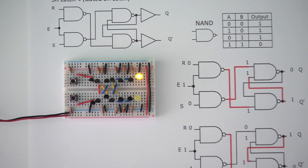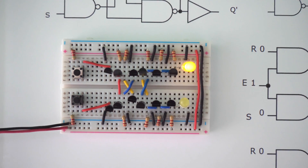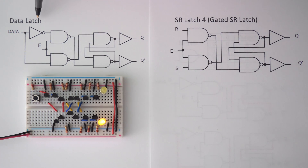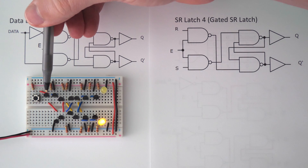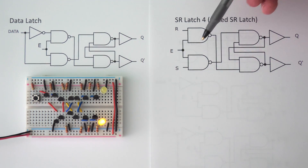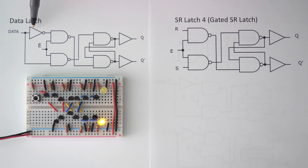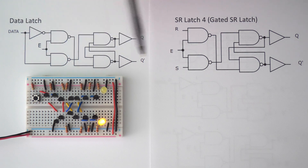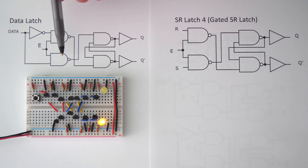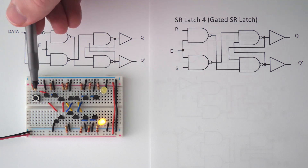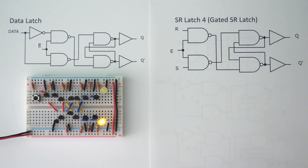Now we're going to look at how to build a data latch. It's very similar to the gated SR latch — I modified the circuit by adding an inverter where previously we had a set and a reset pin. Now we just have our data come into this inverter, and the data also gets fed into where the set pin used to be — into the bottom input of the other NAND gate. So now we just have one push button switch that will toggle our circuit back and forth.